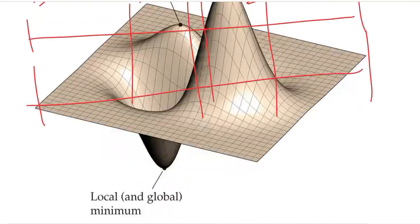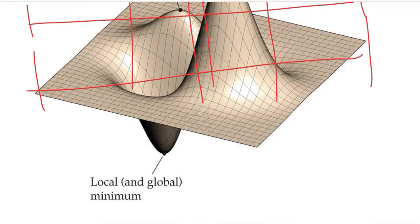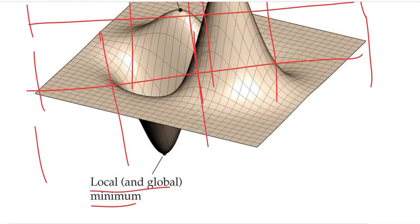At the bottom we have a bowl, and its bottom is both a local and global minimum — because within this range it is a minimum, and in the overall range it is also the minimum.